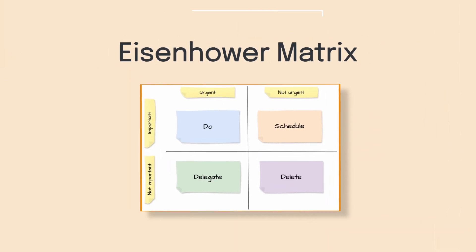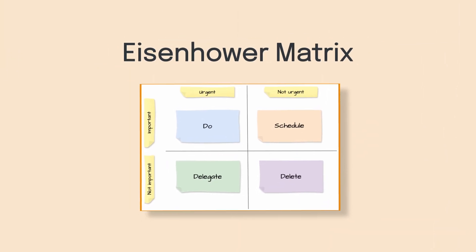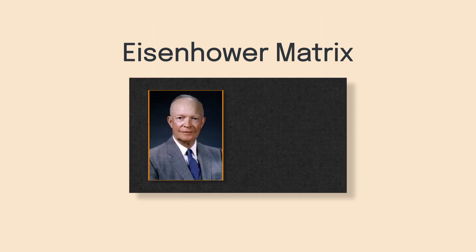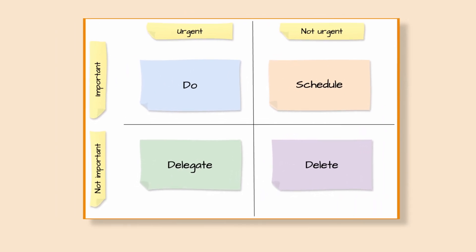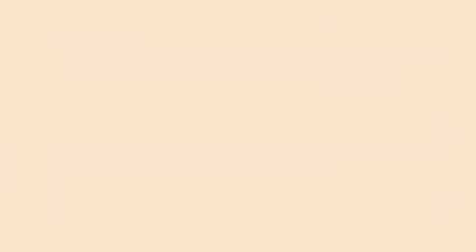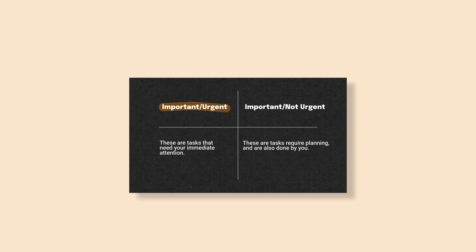Next up is the Eisenhower Matrix. We just mentioned this not too long ago in the previous video linked in the description, but it's worth mentioning again because this tool will help you with time management and prioritizing your tasks effectively. Simply use the framework to assess your to-do list based on how important and urgent each task is — this will help you tackle your tasks in a systematic and efficient way. For a more detailed explanation and example, make sure you check out our video in the description.